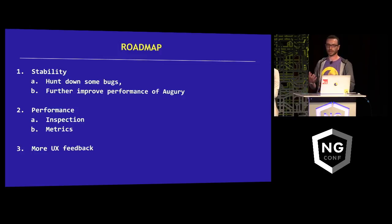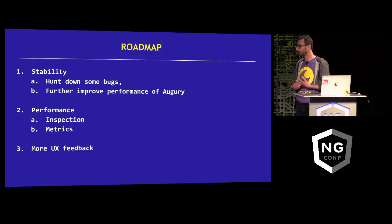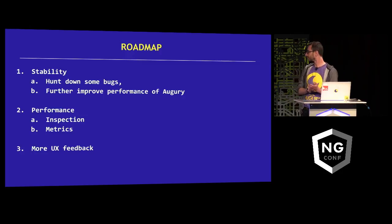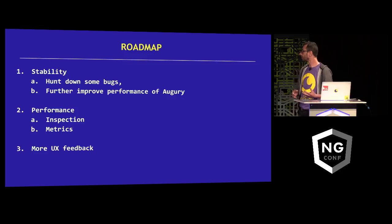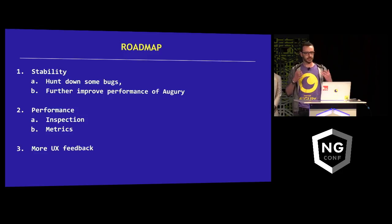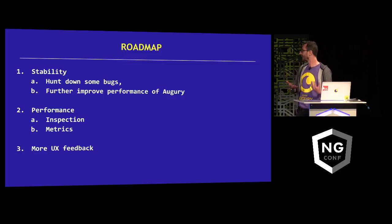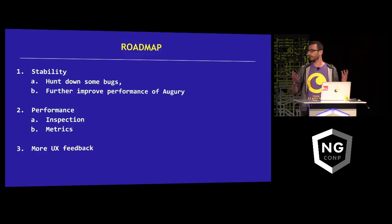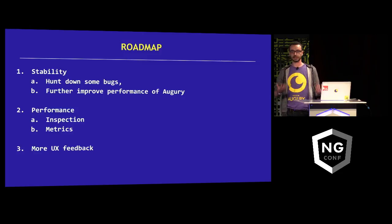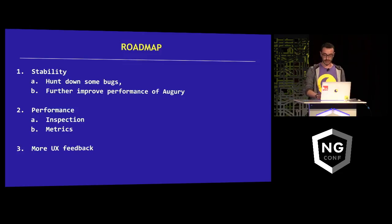Let's talk about our roadmap and where we want to be in the immediate term. First of all, we have to make it work with the release candidate. We're in beta, so we have to hunt down some bugs, make the tool a little bit more stable, and improve performance. Augury works quite well with small, medium, and even large apps, but we can improve on very large scale applications. After that, we're thinking of providing some kind of view or visual aid to inspect and measure the performance of your application so we can build faster applications. We at Rangle are focused on usability testing and feedback from the community, which we'll be incorporating as we go.